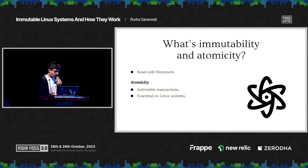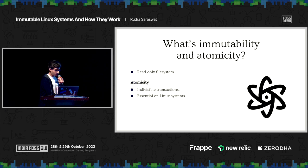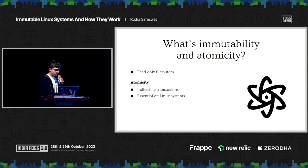As for atomicity, an atomic transaction is one that is composed of several operations that all happen at the same time, and there is no state where they have partially been completed. This is crucial on Linux systems, as you do not want to end up with a broken system after an update because a package installation may have failed and you end up with half of the files having been installed to your root file system.